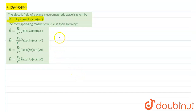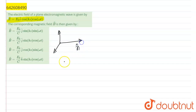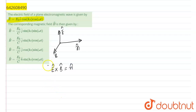As we know, the vibrations of the electric field and magnetic field are both perpendicular to each other and also perpendicular to the direction of energy. So if we assume that is the direction of energy and that is the electric field, that will be the direction of magnetic field. The relation between electric field, magnetic field and direction of energy is given as: ê × B̂ = n̂.